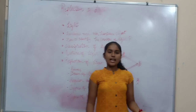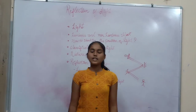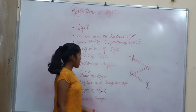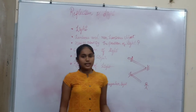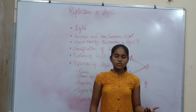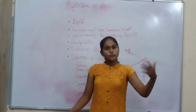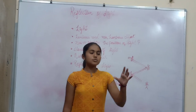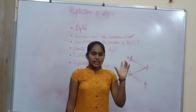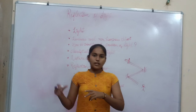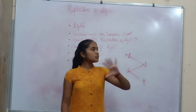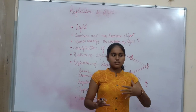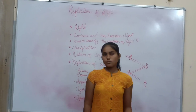In our previous classes we learnt the classification of light — that is opaque, transparent, and translucent. Opaque objects are those through which light cannot pass, but they give a shadow. For example, if a stone is placed in an initial position with a light source, it may show the shadow, but the light cannot pass through a stone.